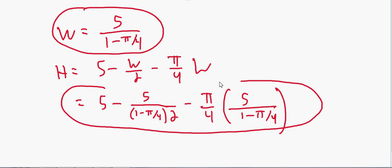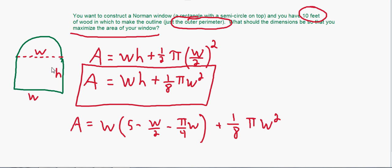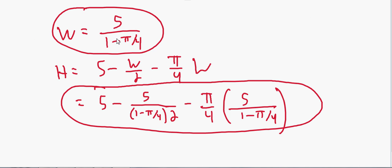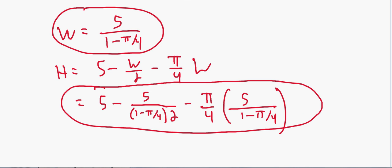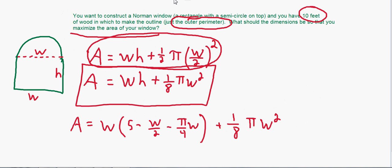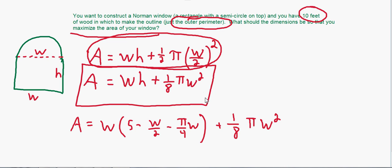These values of w and h give the biggest possible window area. If the question asks for the maximum area instead of the dimensions, find w and h numerically and plug them back into the area equation — a calculator helps here. To summarize: find the equation you're trying to maximize, find the constraint equation, use the constraint to substitute out one variable, then derive and maximize using the first derivative test — just like we've been doing all along.